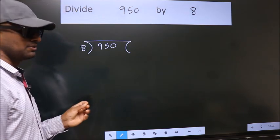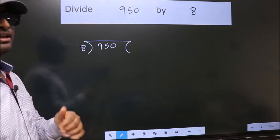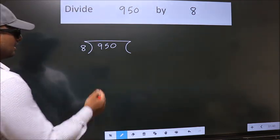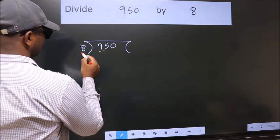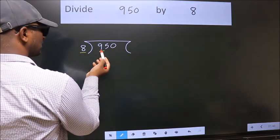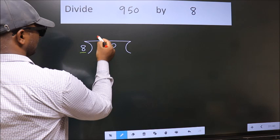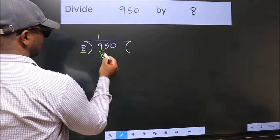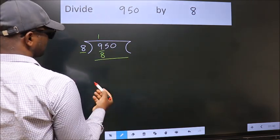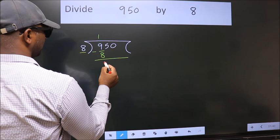This is your step 1. Next, here we have 9, here 8. A number close to 9 in 8 table is 8 once 8. Now we should subtract. We get 1.